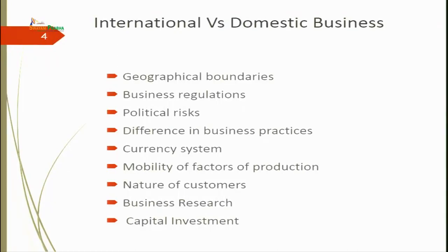Domestic businesses are those which confine their operations within the territory of their own country. They do not cross their home country but operate within a confined area. As per the World Bank Development Indicator, India was reported to have around 5,215 domestic companies as per data from 2020. Geographical boundaries are significant for domestic business, whereas in international business there is no geographical boundary — you can easily move from one place to another.